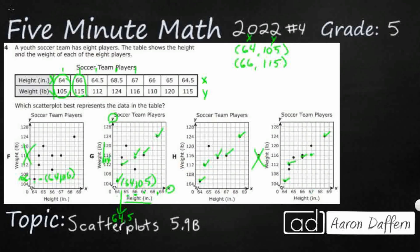Let's do 66 and 110. There's my 110 right there — 66 and 110 goes right there on G, but there's nothing there for H. Let's double-check the last two points: 65 and 120 — yes. And 64.5 and 115 — right there. After a lot of elimination, we got rid of F, H, and J. Our answer is G.